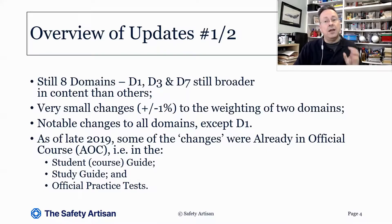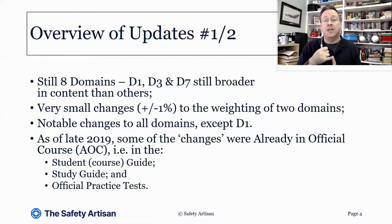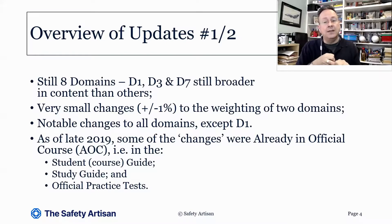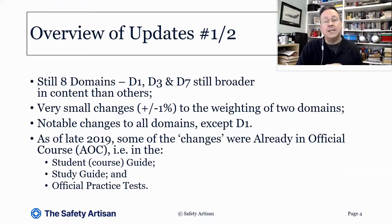Now, having said that, some of those changes were already in the course material, because I did an official CISSP five-day course in 2019. Some of these new changes were already in that material, and some of them were already in the study guide, and some were already in the official practice tests. So I've marked throughout the course some of these things as AOC — for 'already in the official course' — but they're now officially in the syllabus and are required, and perhaps going to be emphasised more than previously.